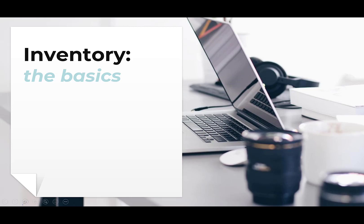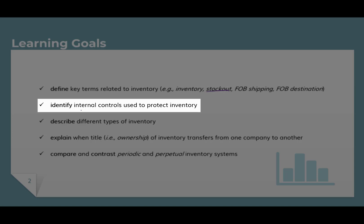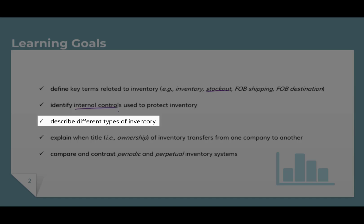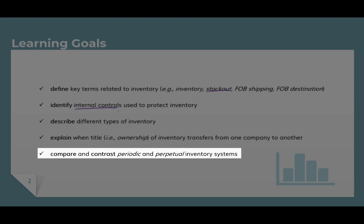By the end of it, it's my hope that you will be able to define key terms related to inventory, including the term inventory itself, this concept of stockout, and a couple of terms related to the transportation of inventory. You will be able to identify internal controls that are used to protect inventory, describe different types of inventory, explain when ownership or title transfers from one company to another, and compare and contrast two inventory systems: one called periodic and the other perpetual.